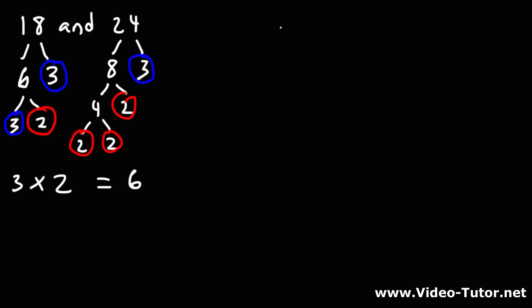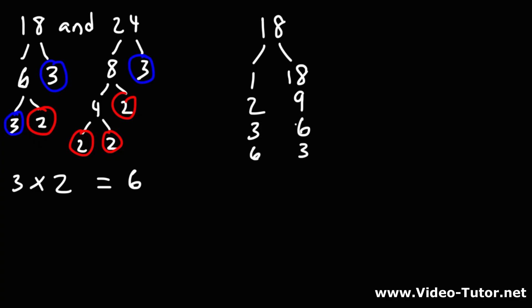Now let's talk about another method to get the same answer. Let's write out the different factors of 18. 18 divided by 1 is 18, 18 divided by 2 is 9, 18 divided by 3 is 6. We can't divide it by 4 or 5. If we divide it by 6, the numbers will reverse, which means we can stop here.